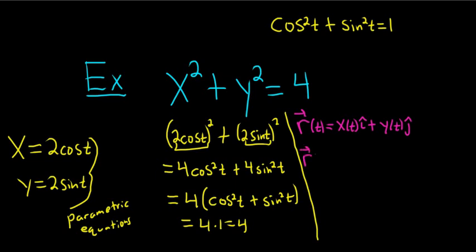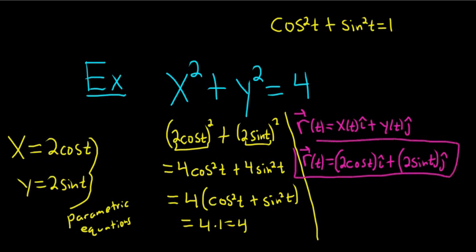So your vector valued function r of t is going to be, well x is 2 cosine t, I'll put it in parentheses, so 2 cosine t i hat plus 2 sine t j hat. And that would be our vector valued function.